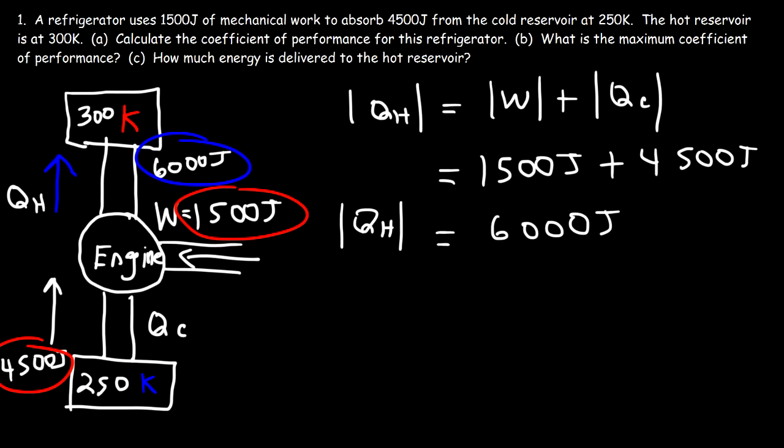The total amount of energy going into the engine must equal the total energy going out of the engine for it to maintain a constant temperature. If the engine absorbs a net amount of energy, its temperature will rise. So to keep the temperature constant, energy in must equal energy out.